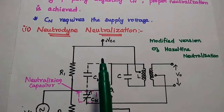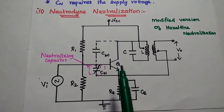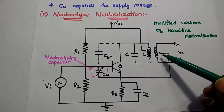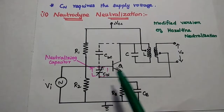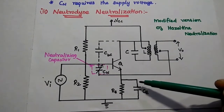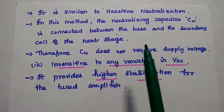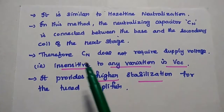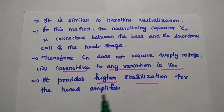In order to overcome this, we move on to neutrodyne neutralization, which is also called the modified version of Hazeldyne neutralization. Its operation is similar, but with one difference: the neutralizing capacitance is connected between the secondary winding — that is the input to the next stage — and the base. Therefore, this neutralizing capacitor does not depend on the supply voltage; it is insensitive to variations in supply voltage and provides higher stabilization for the tuned amplifiers.